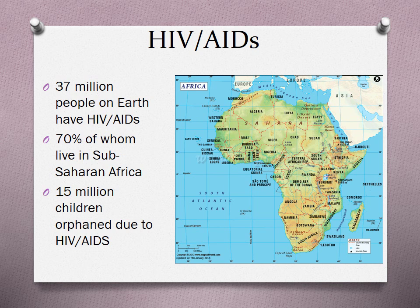Fifteen million children were orphaned due to HIV and AIDS, which created a bigger issue — who was left to look after these kids? When you don't have anyone looking after these kids, you end up with young people who were not given the opportunity to grow up in a traditional sense. Instead, they had to raise themselves, raise their younger siblings, or many were recruited to be child soldiers.